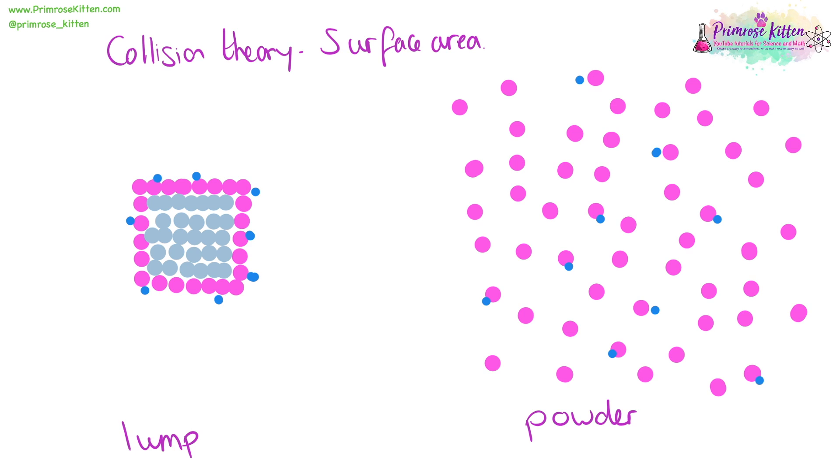When we have a lump of something, it has less surface area, so there is less space to react. Here, the blue dots, whatever that is, can only react with the pink dots on the outside. The purple dots in the inside are exactly the same thing, they're just not available to react. Whereas here, the pink dots are all spread out in a powder format, so they're all available to react. This is really confusing, because the lump is larger than the powder. But assuming we have exactly the same mass, the powder has more surface area than the lump, so more particles are available to react.